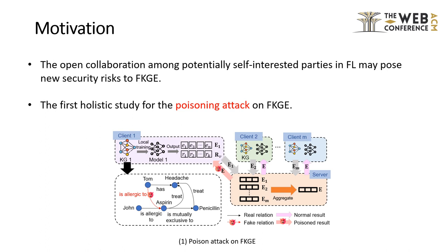The open collaboration among potentially self-interested parties in federated learning may pose new security risks to FKGE. Current works have explored the privacy sides of FKGE, where attackers honestly follow the protocol but want to access other sensitive data out of personal interest. This work focuses on targeted poison attacks in FKGE, which aim to add poison triples to the victim's model, leading to biased KGE and incorrect decisions of downstream applications.